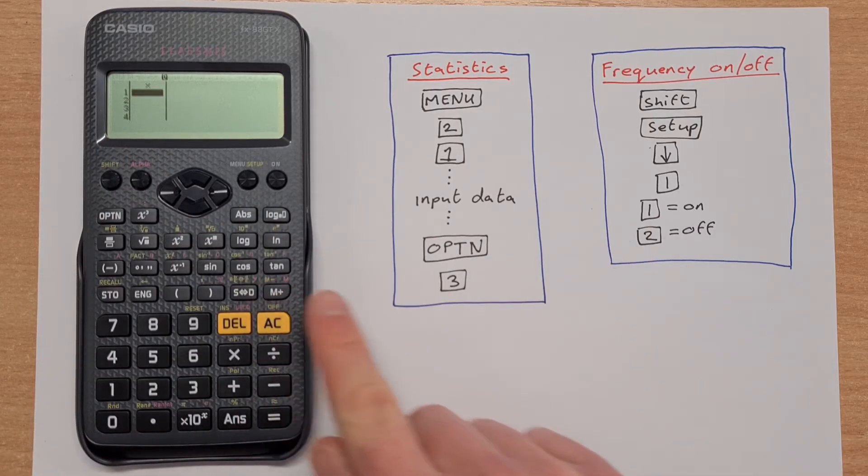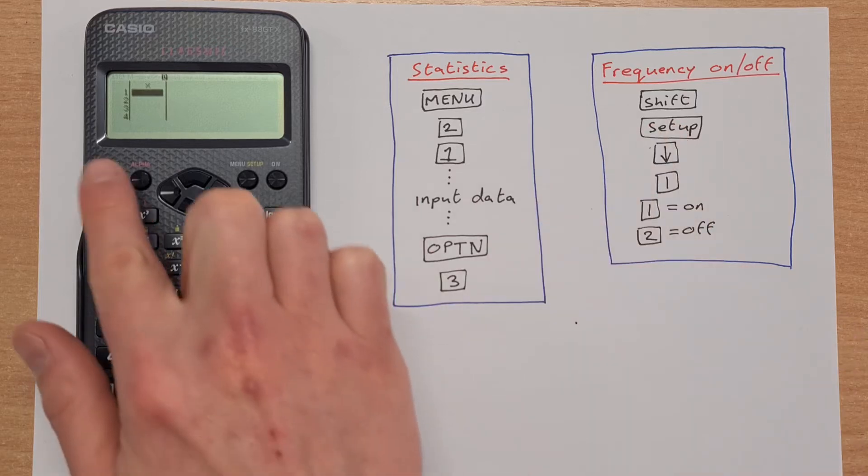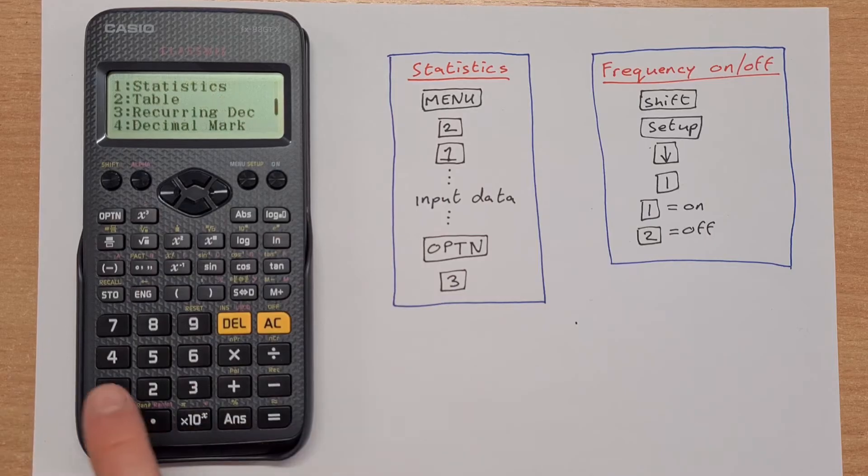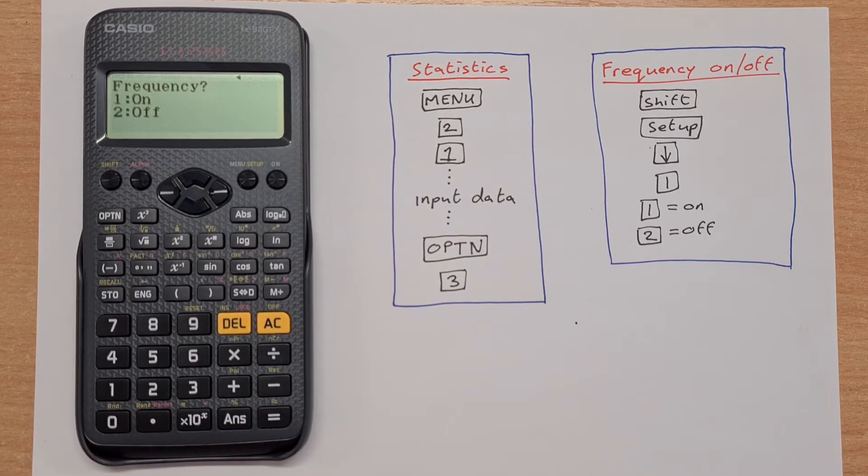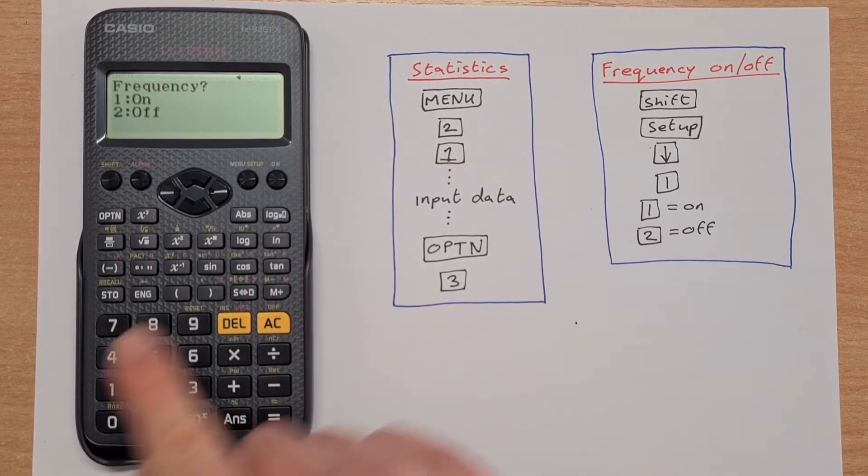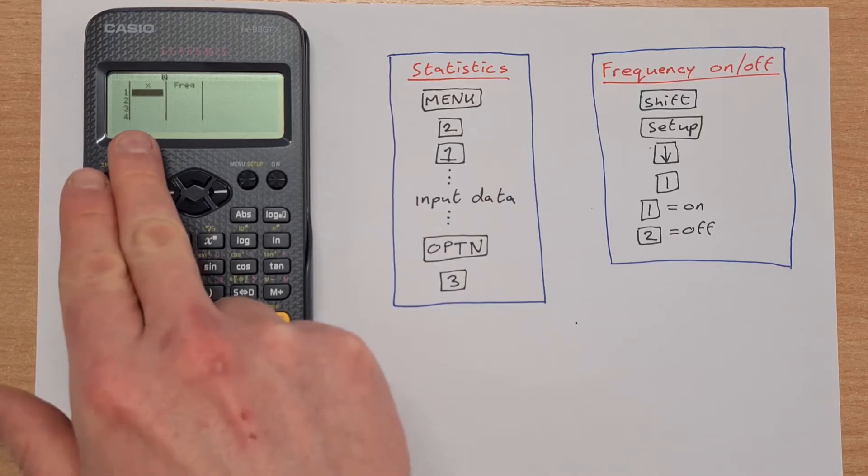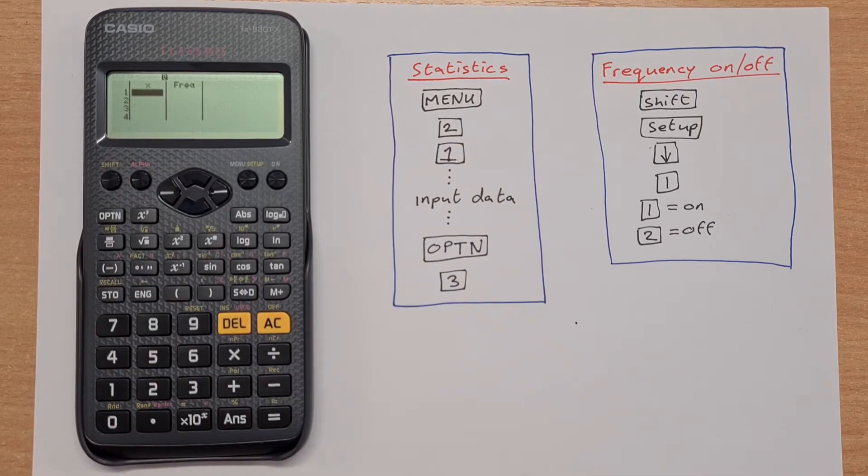If you want to turn on a frequency, what we do is we press shift setup, we press down, then we press 1 and we can turn the frequency on or off. So you press 1 for frequency on, 2 for frequency off. So I want the frequency on and that gives me my two columns here: my x column and my frequency column.